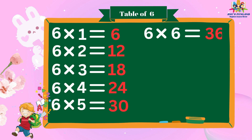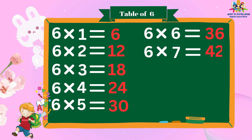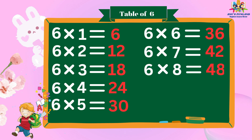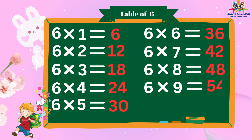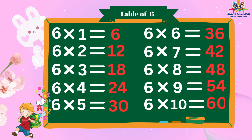Six eights are thirty-six. Six eights are forty-two. Six eights are forty-eight. Six nine's are fifty-four. Six ten's are sixty.